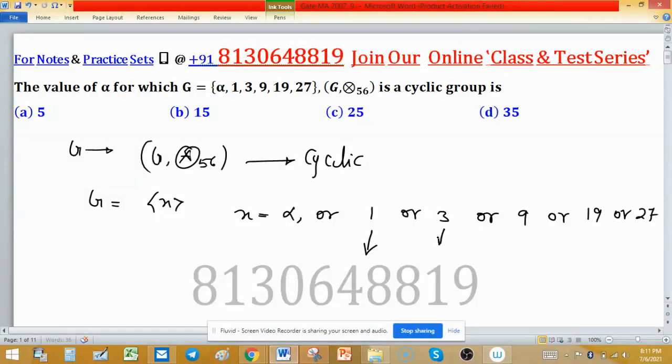1 is 3^0, 3 is 3^1, 9 is 3^2, and 27 is 3^3. These are a few elements that might be generated by 3, so it may be possible that G is generated by 3.